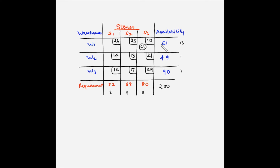With this allocation, the supply availability at W1 becomes 0 while the demand at S3 becomes 80 minus 61, which is 19. Since the entire supply available for W1 has been allocated to W1S3, W1 is no longer available to supply to any other stores. We cross off the remaining squares for W1, indicating they are no longer available for allocation.